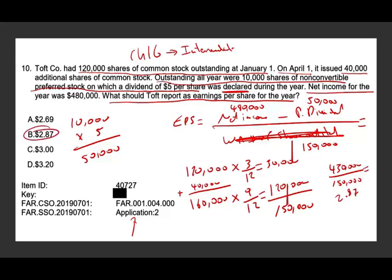We have to be careful in this problem — they told us the dividend was declared, so we deducted it. You need to be careful whether the dividend is declared or not, and whether the preferred stock is cumulative or not. If it's cumulative, you always deduct it. If it's non-cumulative, you have to determine whether it's declared. There's more involved — see my Intermediate Accounting Chapter 16 for more. This is only computing basic EPS; you might also need to compute diluted EPS, which is more involved.